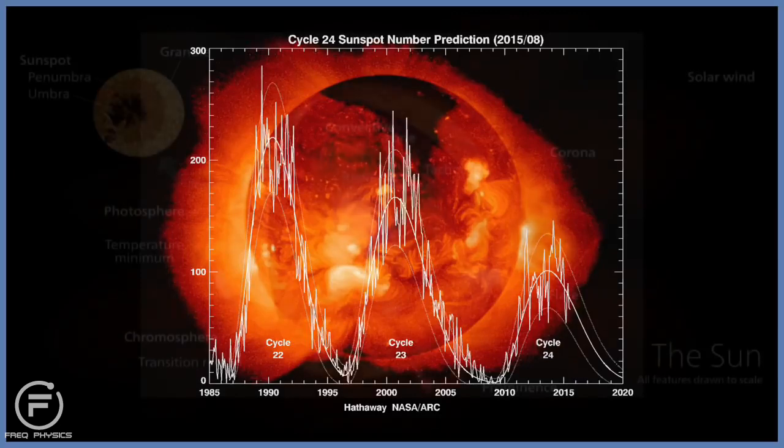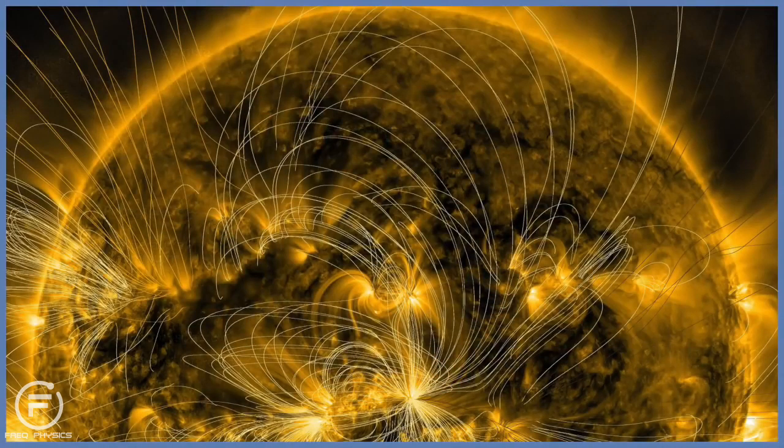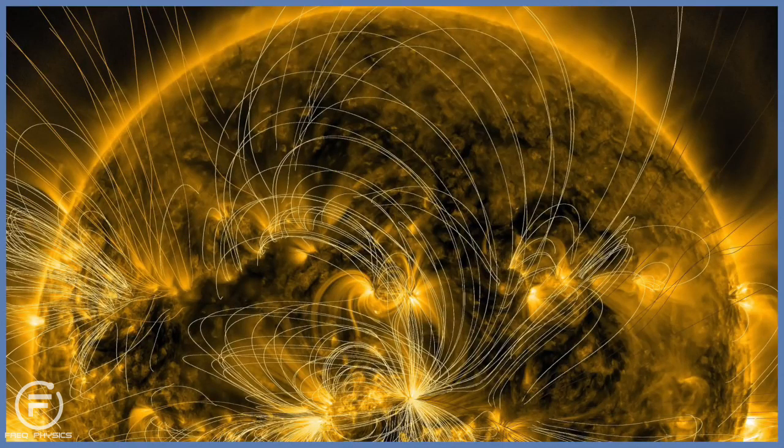The basic structure of the sun can be categorized in several layers. You've got the core, the radiative zone, the convective zone, the photosphere, the chromosphere, and the corona. Somewhat bizarrely, the very outer layers of the sun, the chromosphere and the corona, are hotter than the photosphere. This is probably because of the heat that is generated from the magnetic field of the sun.